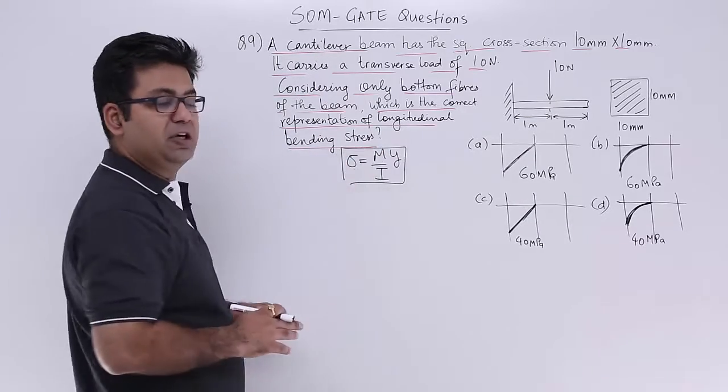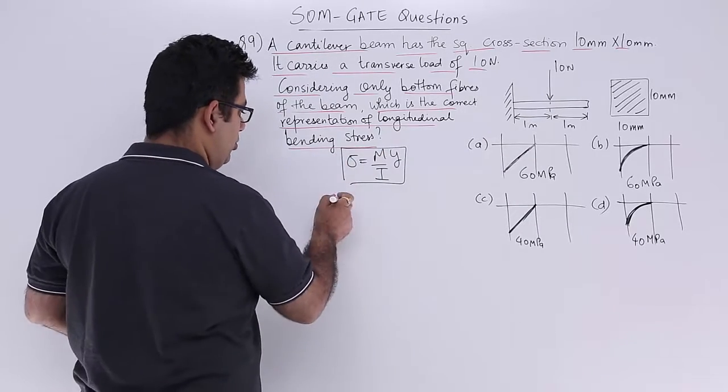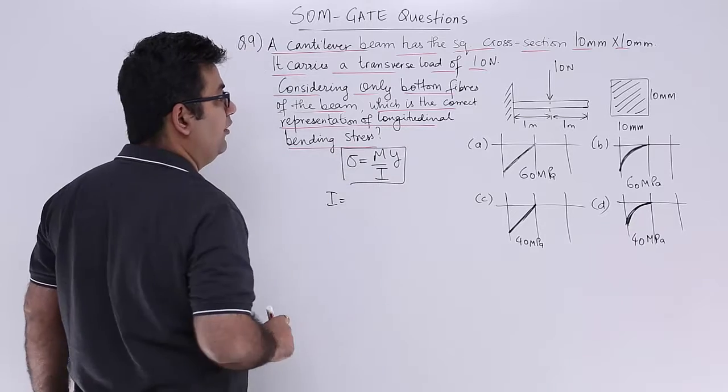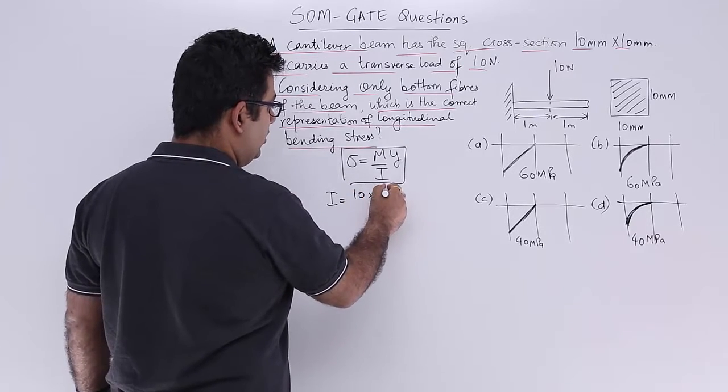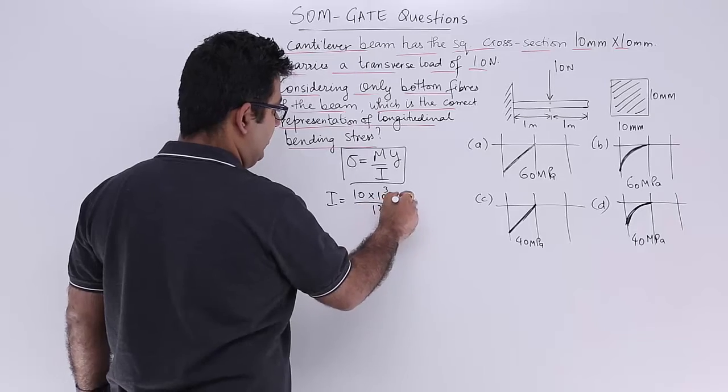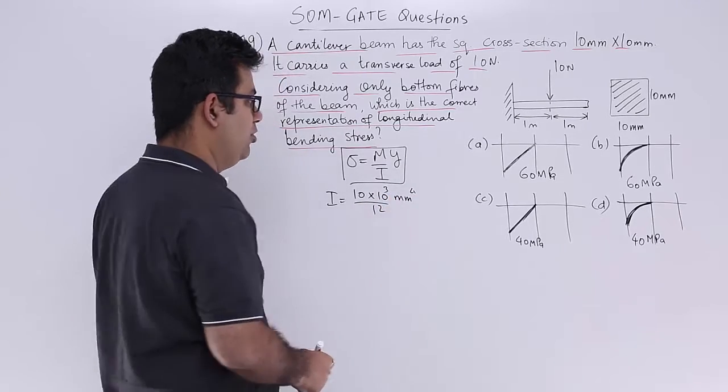So first of all the moment of inertia would be constant. So moment of inertia would be if you take 10 into 10 cube by 12. This would be your moment of inertia.